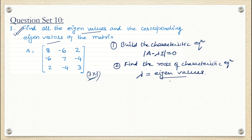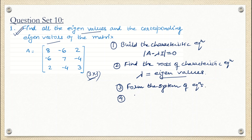In the next class, we are going to take an example where the roots of the characteristic equation will be the same — and we will see how to find the eigenvalues and eigenvectors in that case. Once we have the eigenvalues, the third step is to form the system of equations. The fourth and last step is to find the eigenvectors corresponding to those different eigenvalues.